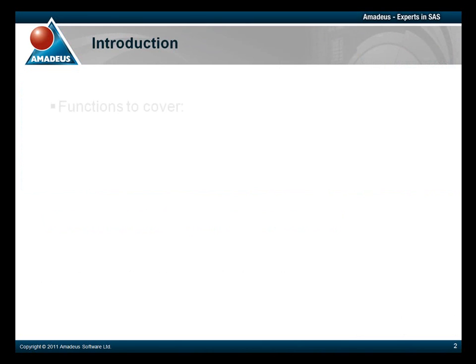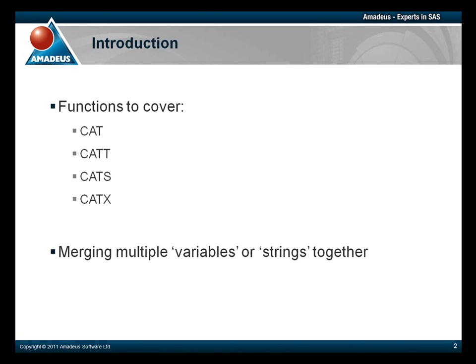This will be followed by a demonstration comparing each new concatenating function with the method used prior to SAS version 9 in order to achieve the same result. The four concatenating functions that we are going to cover in this podcast are the CAT, CATT, CATS and CATX functions. These are faster and more efficient methods of concatenating strings, and they also allow the user to use the OF syntax to concatenate multiple variable lists.